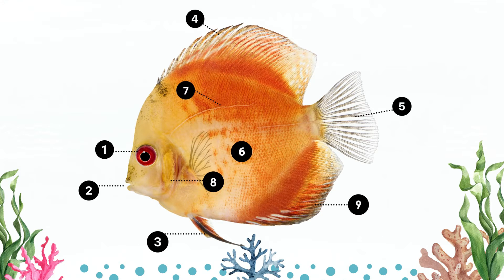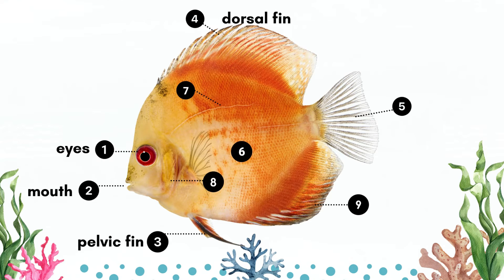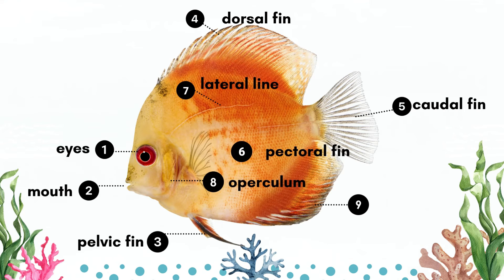Can you remember the different parts of the fish? Number one: Eyes. Number two: Mouth. Number three: Pelvic fin. Number four: Dorsal fin. Number five: Caudal fin. Number six: Pectoral fin. Number seven: Lateral line. Number eight: Operculum. Number nine: Anal fin. Well done!